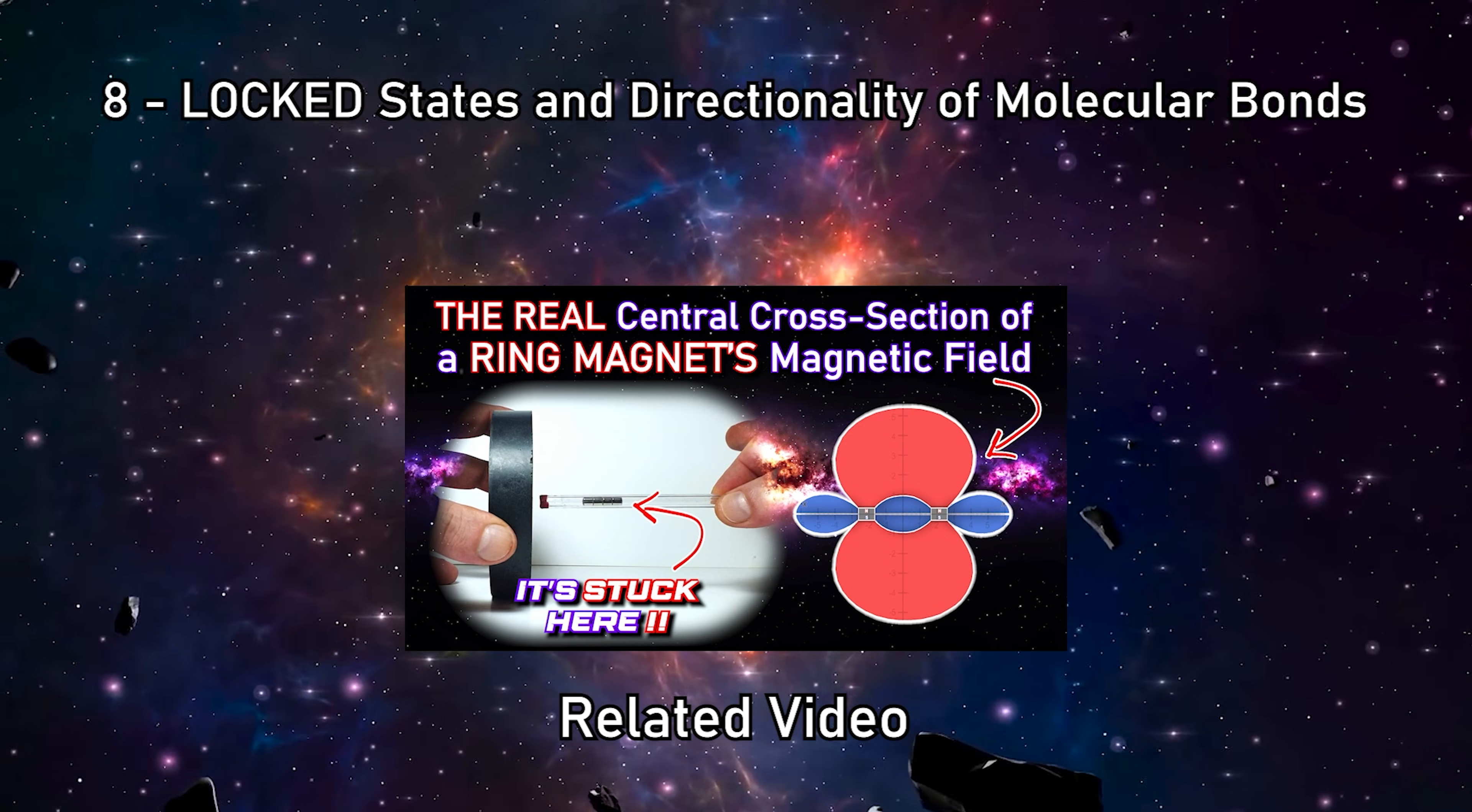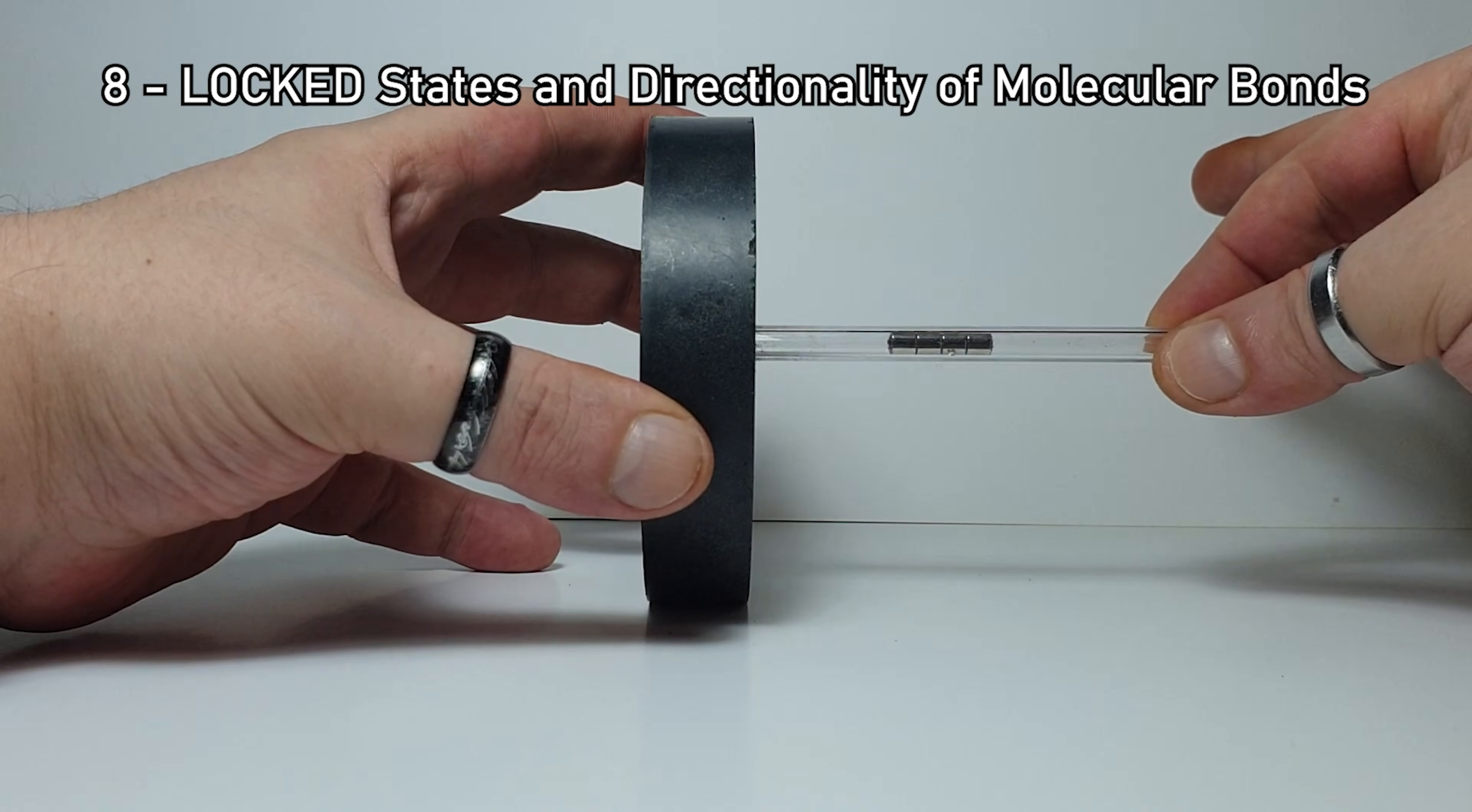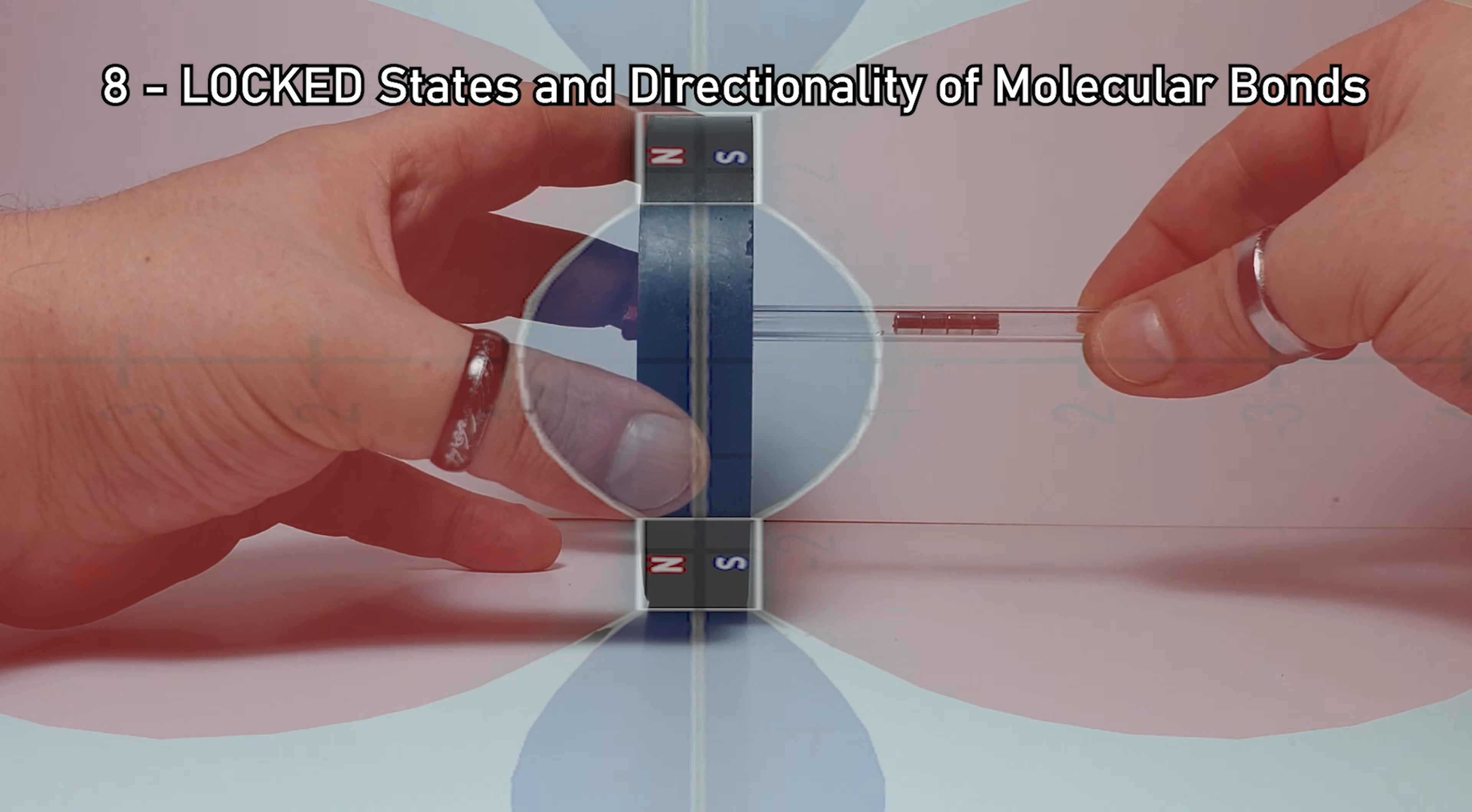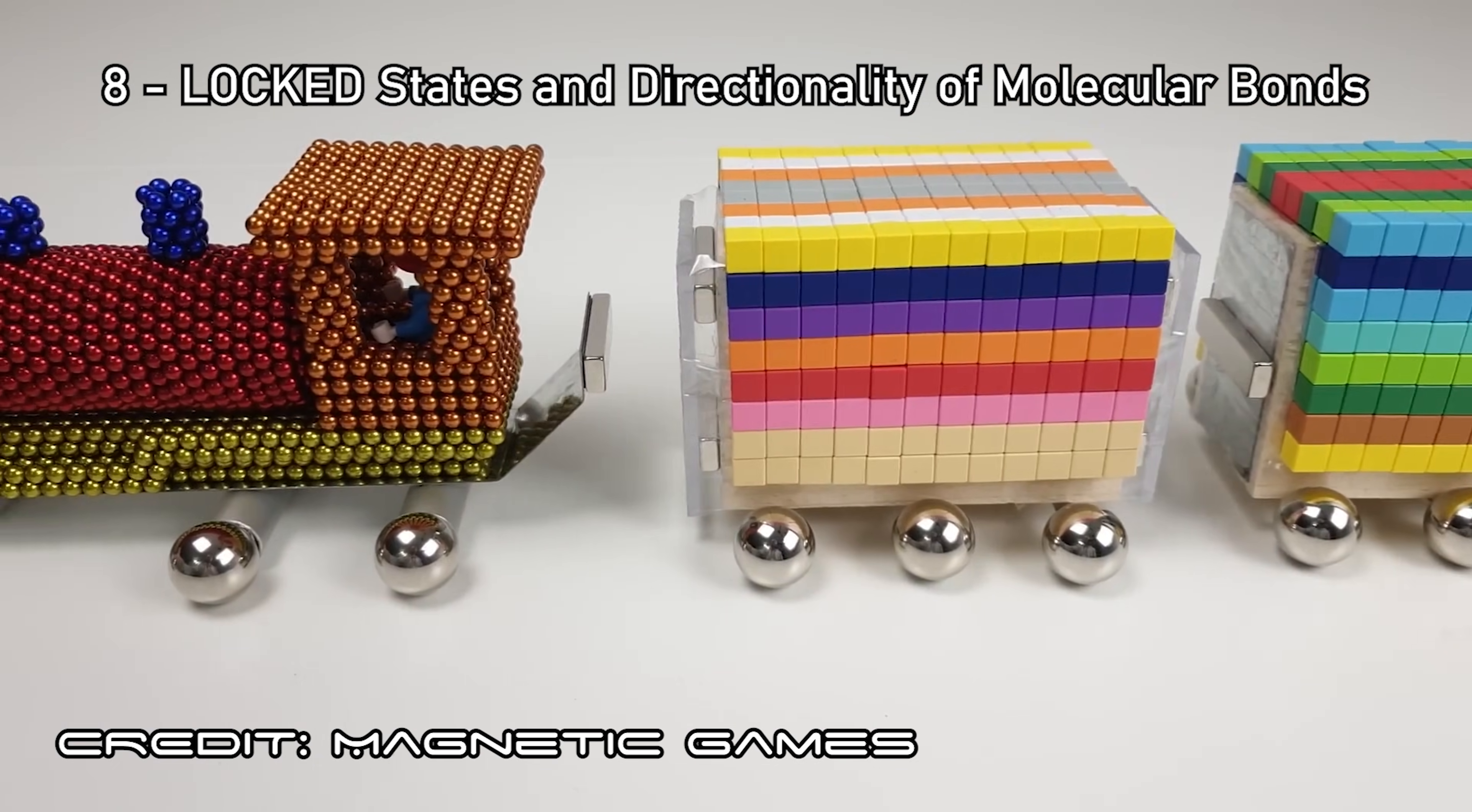8. Locked States and Directionality of Molecular Bonds. There exist locked interactions between magnets that freeze their positions at specific, constrained points. These positions are not arbitrary. They are directional, stable, and reproducible. Interpreting them as macroscopic analogs of the directionality of molecular bonds allows us to understand them not as anomalies, but as structural information of the system.